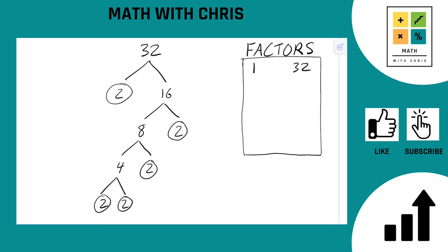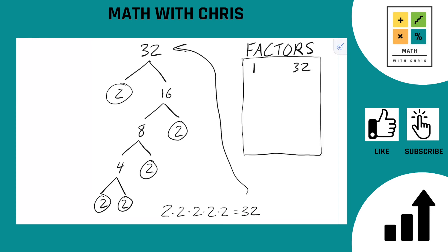They're all prime numbers — they all end in 2s. We've got five 2s here, so that means we're done with the tree. Five 2s: 1, 2, 3, 4, 5. So the prime factorization of 32 is 2 times 2 times 2 times 2 times 2. That does indeed give you 32 if you multiply it out, which means we've got it right.